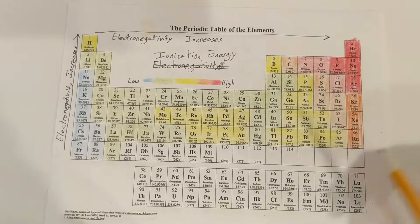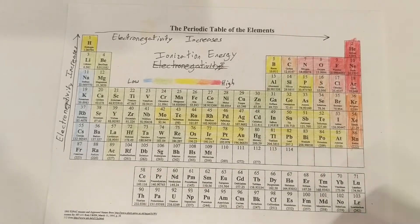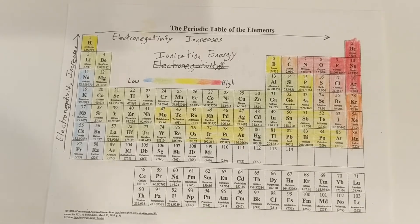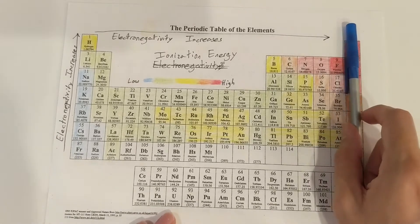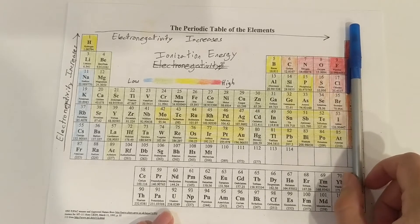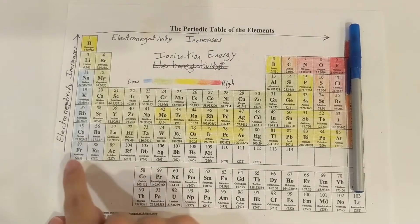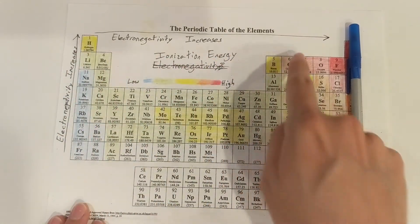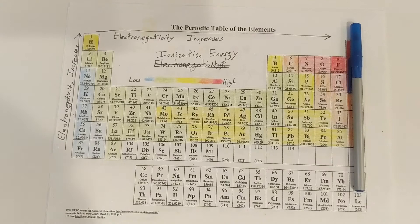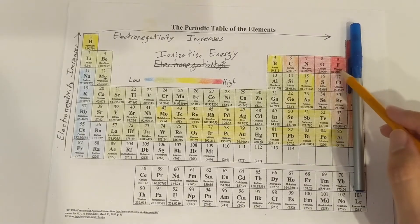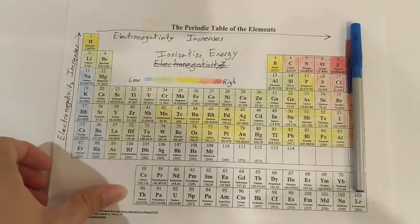But one thing you'll notice is electronegativity also has a very similar trend. The only difference is we would ignore our noble gases because they don't really have an electronegativity because they don't want to attract electrons. So as we move up and to the right, our electronegativity will also increase. And our element with our highest electronegativity is fluorine.